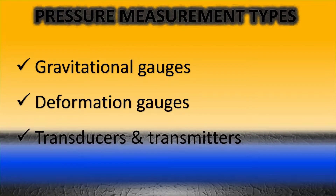There are different types of pressure measurement techniques. First and foremost is gravitational gauges, then deformation gauges, and the third is transmitters and transducers. Today we will be concentrating mainly on the gravitational gauges and the deformation gauges, because transmitters and transducers is a very vast topic and we'll cover it in the next video.